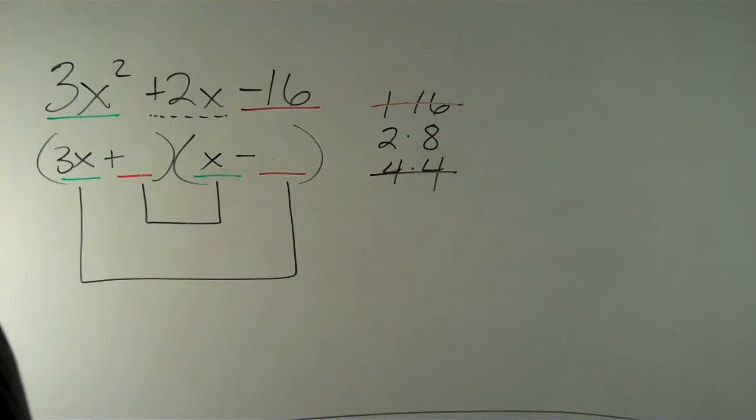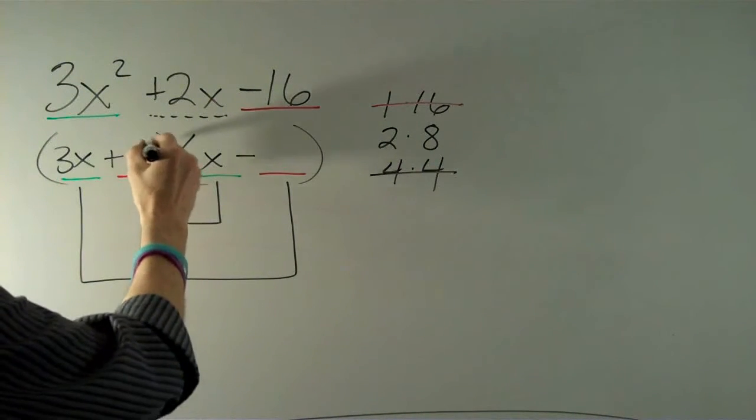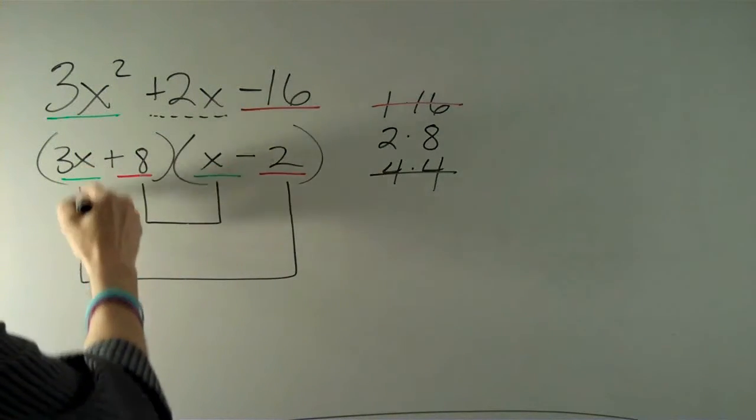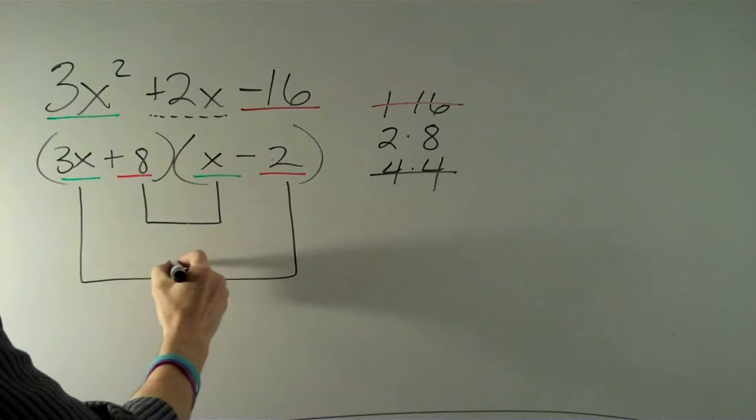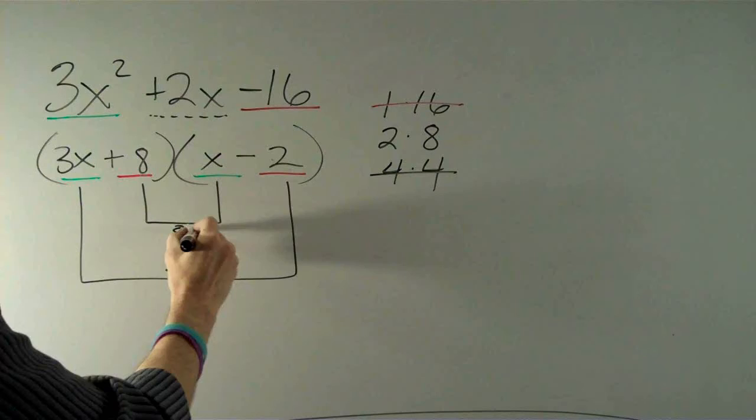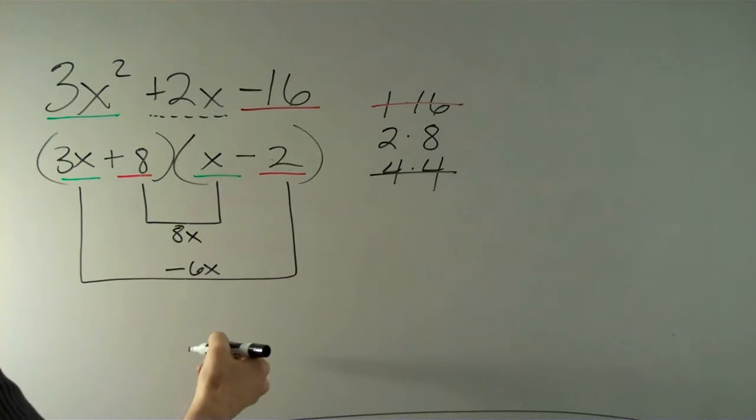Let's try 2 and 8. Let's put my 8 here and my 2 here. What I get is 3x times negative 2, which is negative 6x, and 8 times x, which is 8x. And 8x minus 6x gets me 2x, which is exactly what I was looking for. So this is my answer.